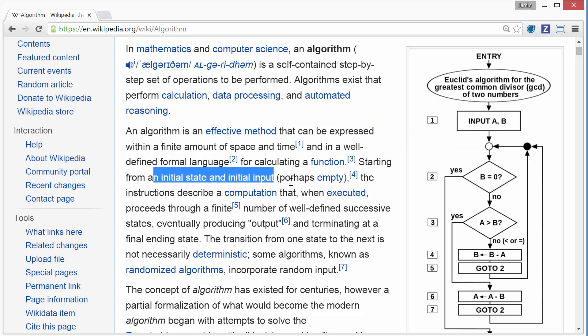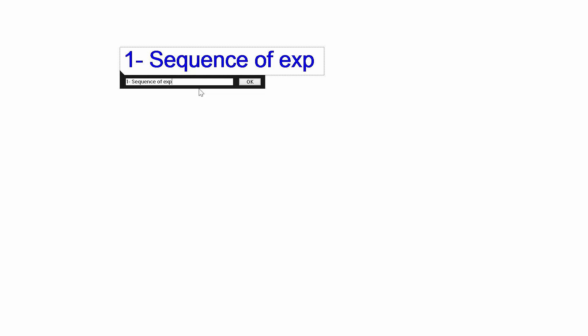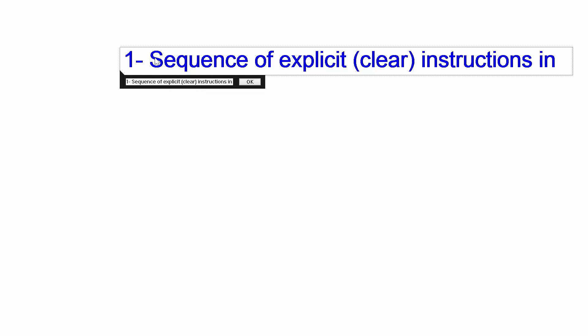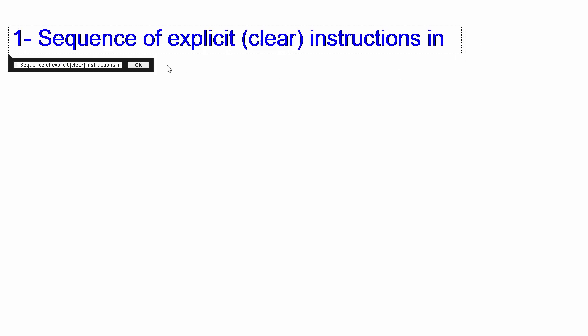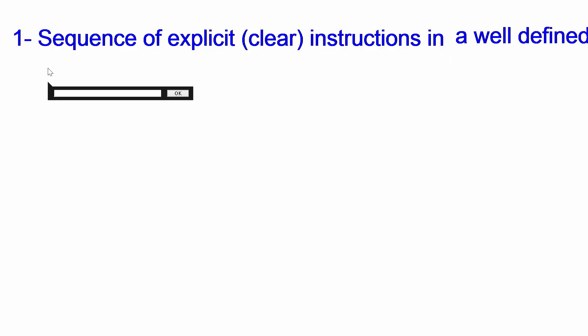Starting from an initial state, an initial input — instructions describe computation when executed, proceeds through a finite number of well-defined states. Let me outline the points of this definition that I think are going to be critical. Point number one: sequence of explicit, clear instructions in a well-defined language. No pronouns, no nothing — give me some clear instructions I can follow.